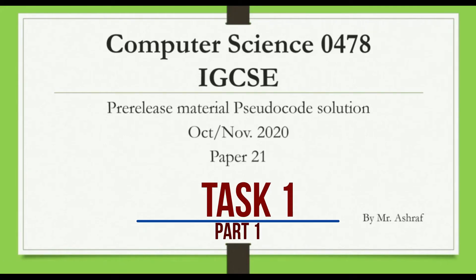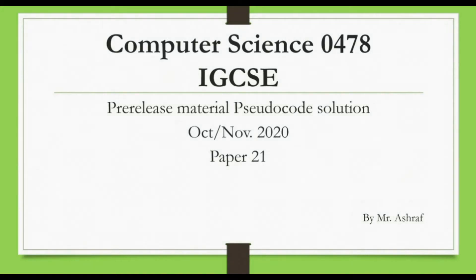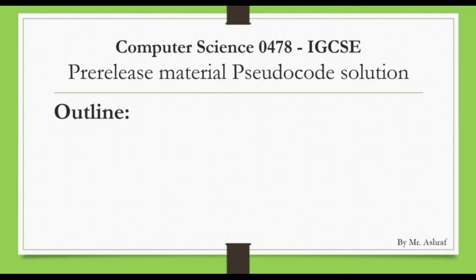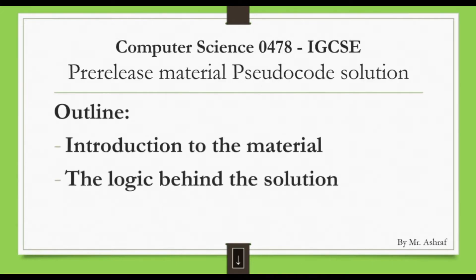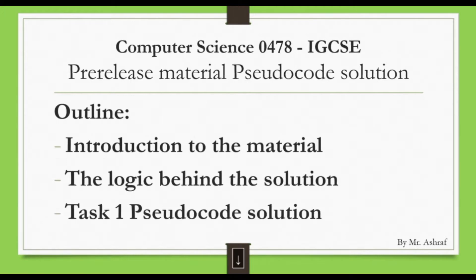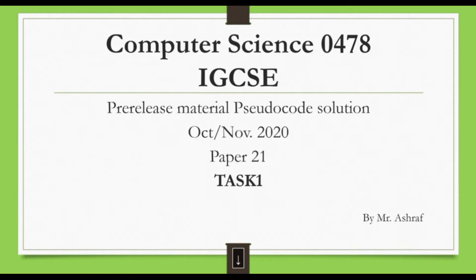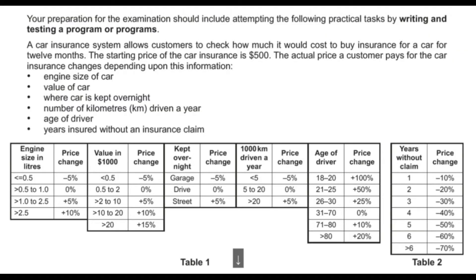Welcome back everyone. This is Computer Science 0478 IGCSE — the pre-release material solution for October/November 2020, Paper 2-1. In the previous video I explained the introduction to the material and the logic behind the solution. In this video I'm going to continue with the main task, which is Task 1.